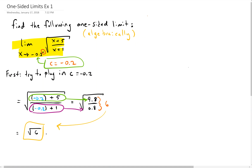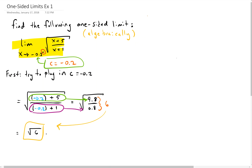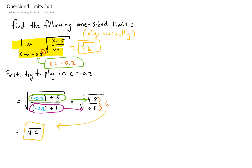So the limit of the square root of x plus 5 over x plus 1 as x approaches negative 0.2 from the left is actually root 6. That's it. Thanks for watching. If you'd like, leave a comment or like the video. Thanks.